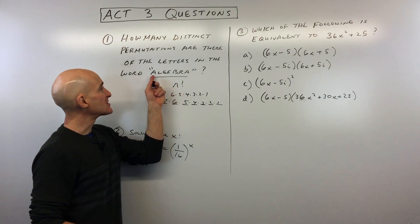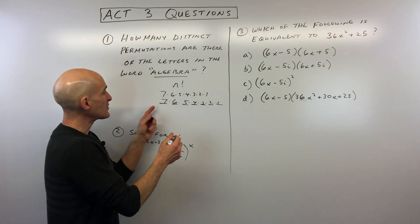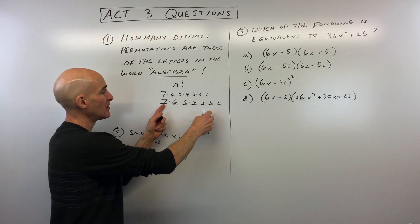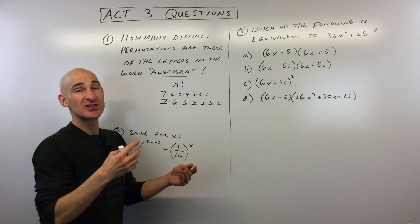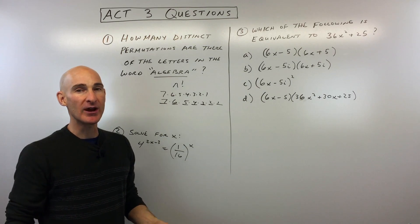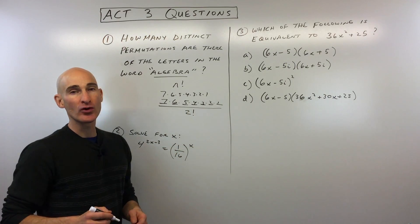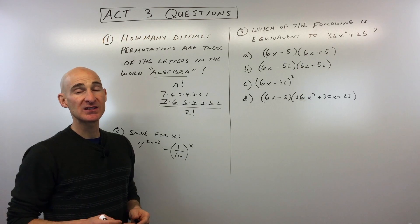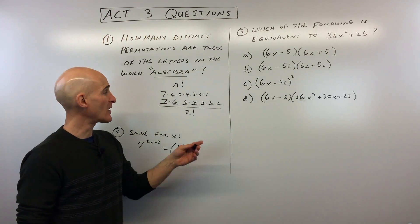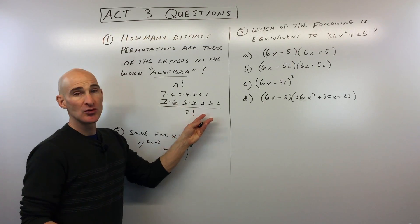The only problem though is that you see how there's two A's in algebra? So if I was to put the A over here and over here or switch them, it would still look like the same word, algebra. So what we have to do is we have to divide out two factorial because there's two ways of placing those A's, and you wouldn't really realize that it's a different word. So we have to divide out those multiplicities or those duplicates.